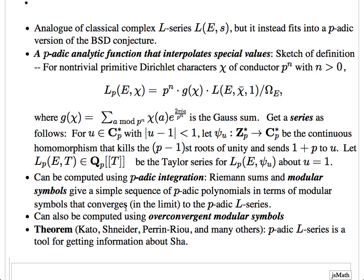The over-convergent modular symbols approach has a primary advantage: if you want the L-series to high precision — big-O of p cubed or p to the fourth — you get a substantial speed-up. This can give you 20 or 30 p-adic digits, no problem at all. But if you only want very low precision — for many applications all you need is the p-adic L-series mod p — then the Riemann sums approach is very good. They're really complementary approaches, each with its value.